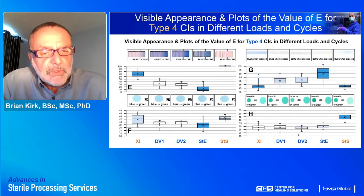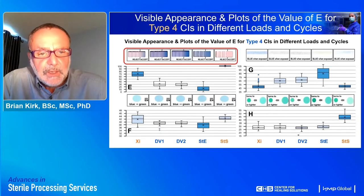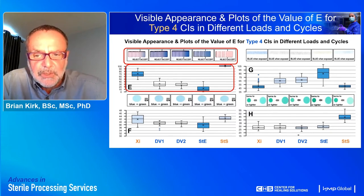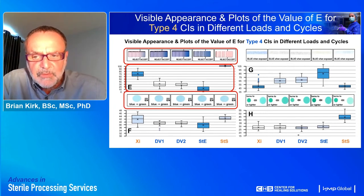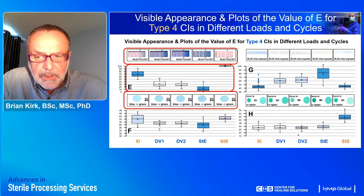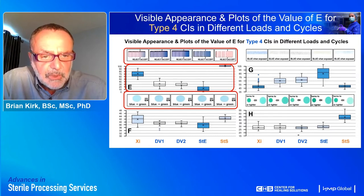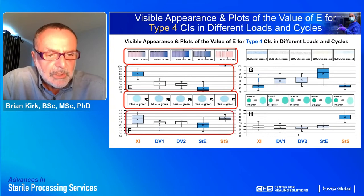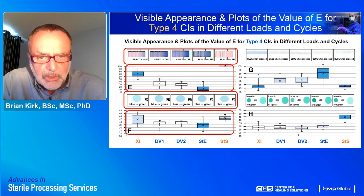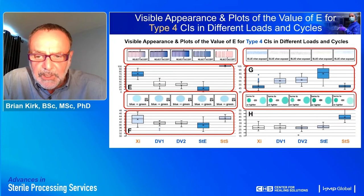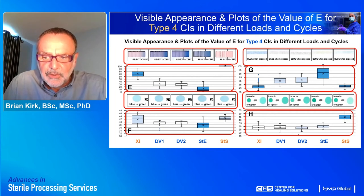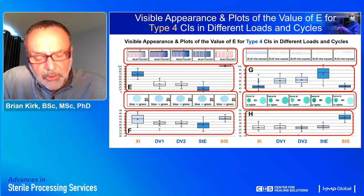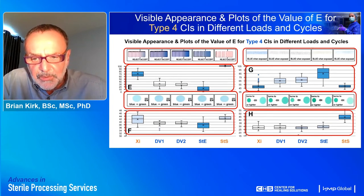Looking at the type 4 CIs in different loads and cycles: products E and G showed observable differences in color between the recommended and not-recommended operating cycles, with measurable statistical differences. Product F showed barely observable differences in color between test conditions and only some statistical differences. Product H showed very slight differences in color between XI and STS and the other three conditions, which were pretty much equivalent to the reference color, so all were interpreted as passes, with some statistical differences observed.